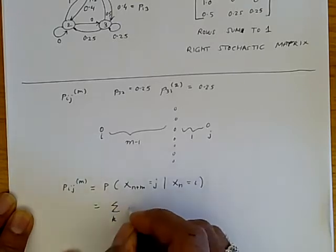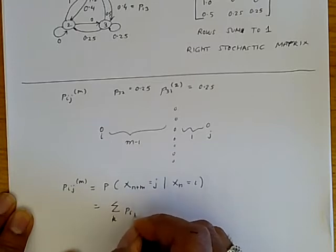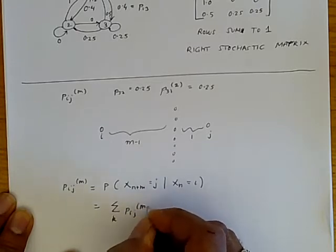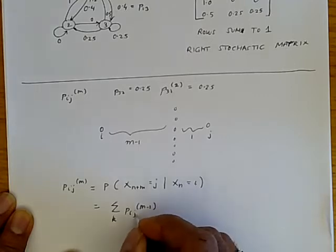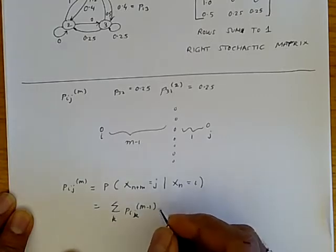This is given by the sum of probabilities over all possible values of k, which are the different states, of going from i to k in m minus one steps, and then Pkj.